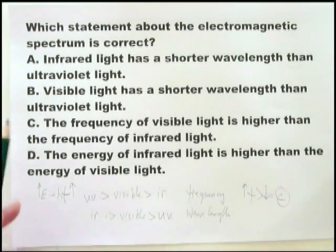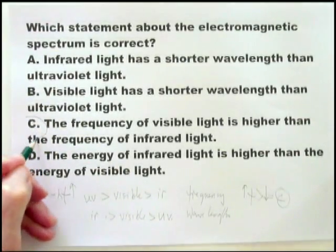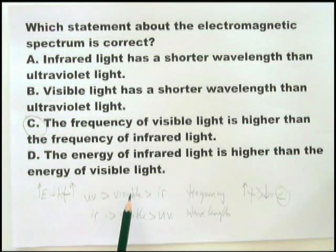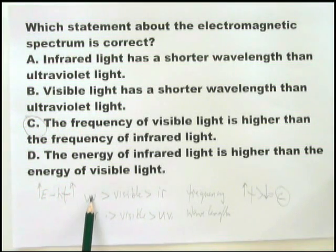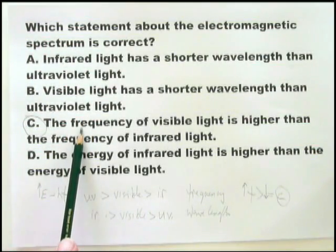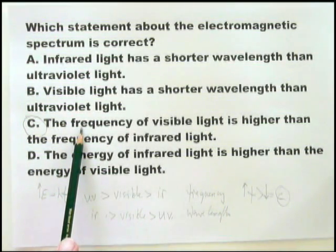So you have only one which is correct — the frequency of visible light is higher than that of infrared. The energy of visible light is higher than that of infrared, and the ultraviolet frequency and energy are higher than both of them. If you remember those few things, you would get this question right. There are a lot of words in it, but it can still be done in about 30 seconds.